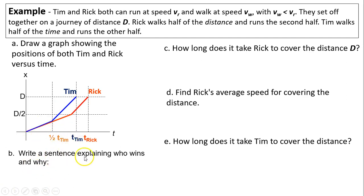Next one. Write a sentence explaining who wins and why. So the winner will take less time to get there. So from this graph, you can see Tim is a winner because Tim takes less time. Tim wins because he takes shorter time to cover the same distance.